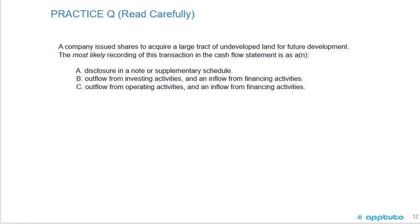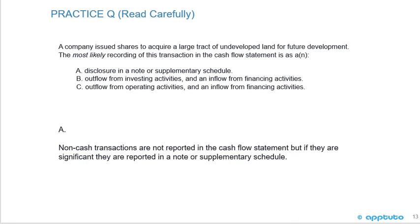Practice question — read carefully: A company issued shares to acquire a large tract of undeveloped land for future development. The most likely recording in the cash flow statement is A) disclosure in a note or supplementary schedule, B) outflow from investing and inflow from financing, or C) outflow from operating and inflow from financing. This is a shares-for-land transaction — no cash has changed hands. Non-cash transactions are not reported in the cash flow statement body; if significant, they are disclosed in a note or supplementary schedule. Answer: A.